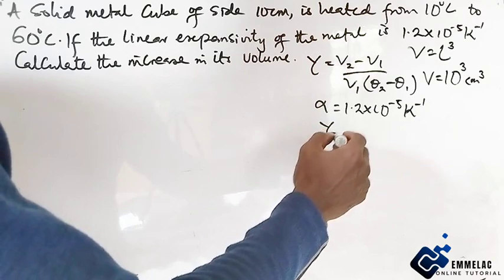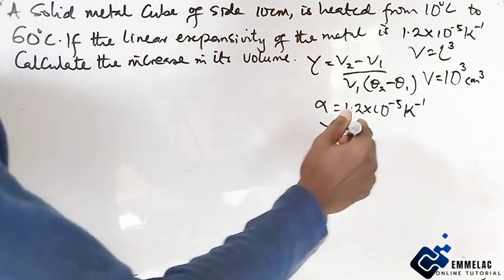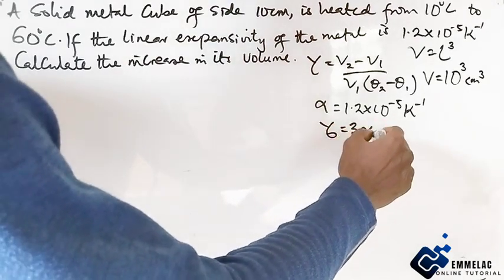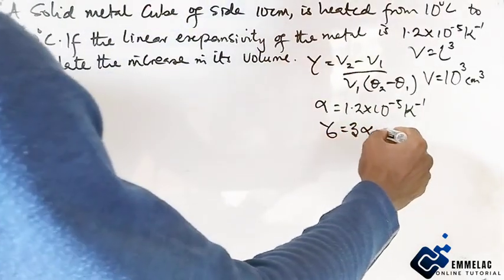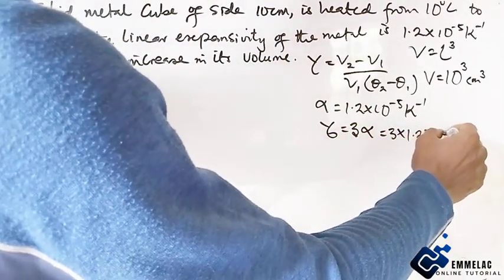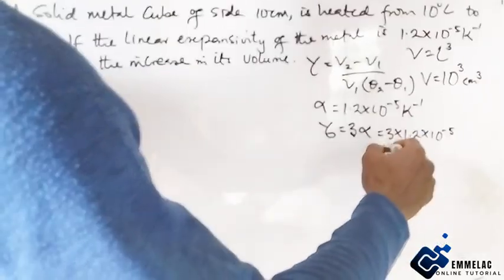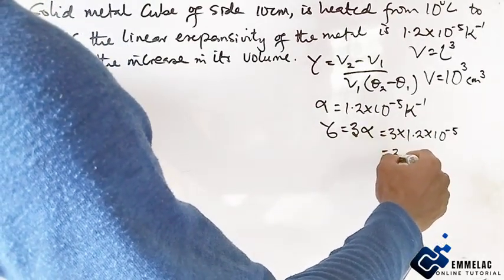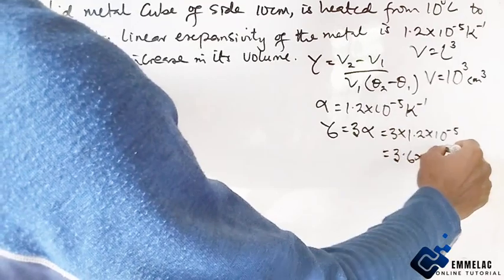We know by formula that the cubic expansivity, which is denoted by gamma, is given as 3 alpha. So this will give us 3 times 1.2 times 10 to the power minus 5, which will give us 3.6 times 10 to the power minus 5 per kelvin.